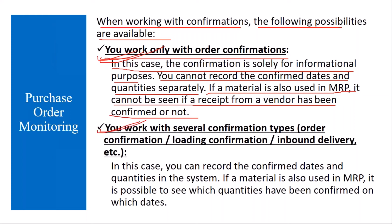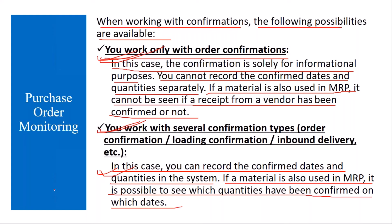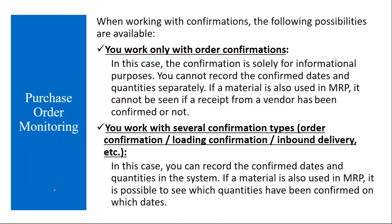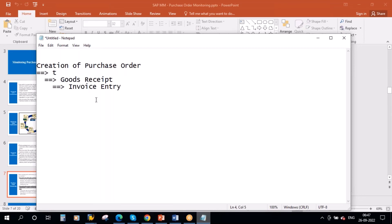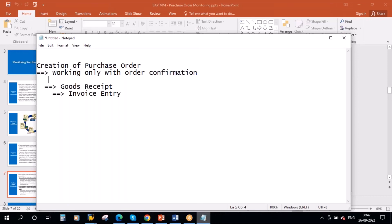The second option is working with different confirmation types, also called confirmation keys. In this case, you can record the confirmed dates and quantities in the system. The vendor tells you he is going to deliver on a specific date and a specific quantity, and you can enter that in the system. If a material is also used in MRP, it is possible to see which quantities have been confirmed on which date — so you know exactly when and how much is coming.